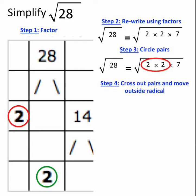Next, I'll cross out any pairs and move them outside the radical. I'm going to cross out those 2s and move a 2 outside the radical.